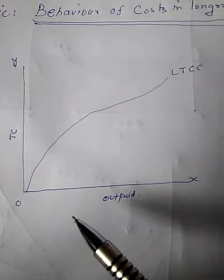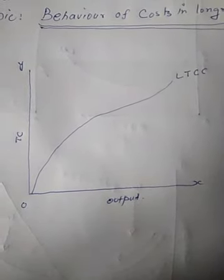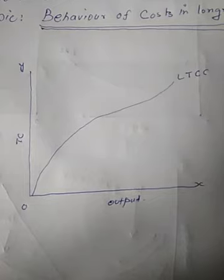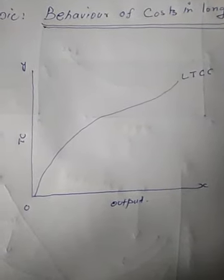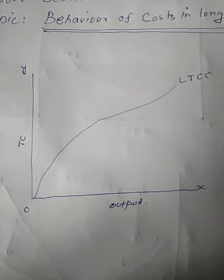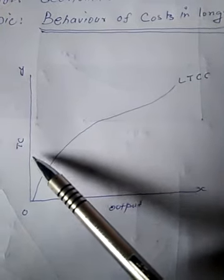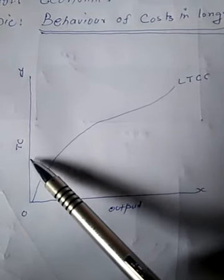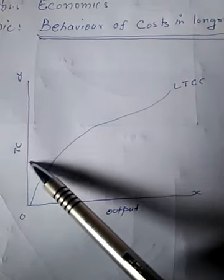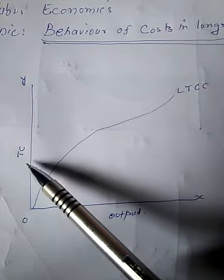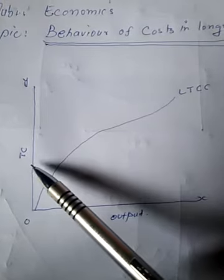The long run total cost curve starts from the origin or zero because in the long run all costs are variable costs, and variable costs always vary with output. So when output is zero, variable costs are also zero. Unlike in the short run, where you saw that this curve started from a point on the y-axis, here it starts from zero.